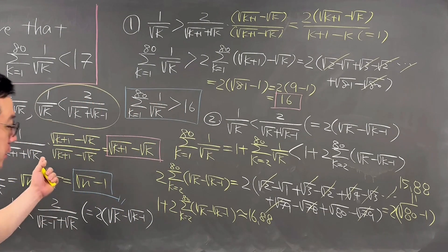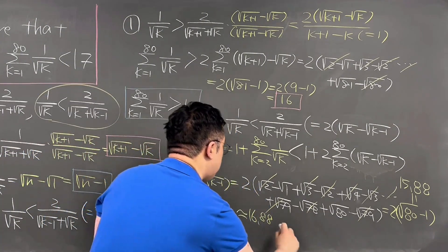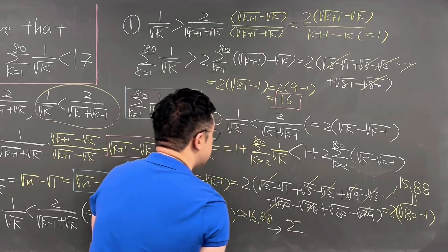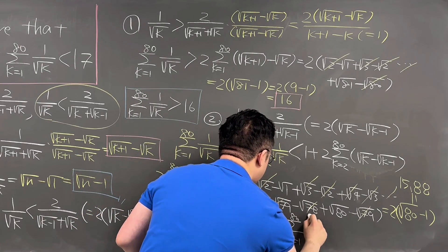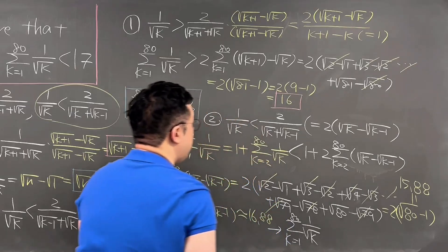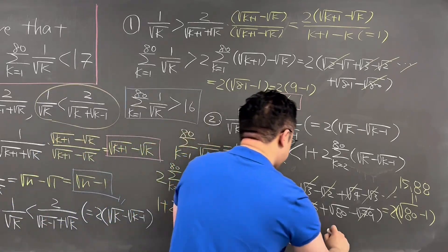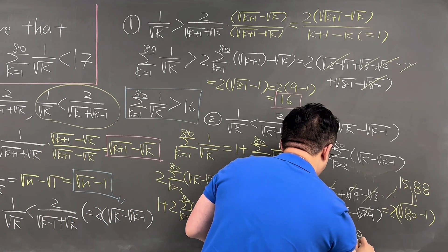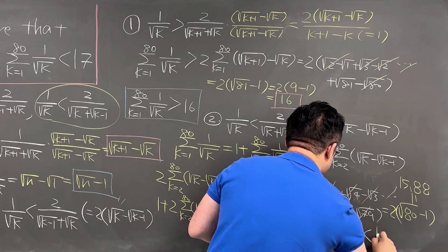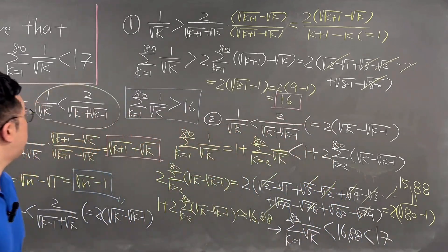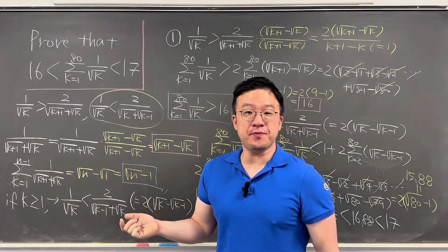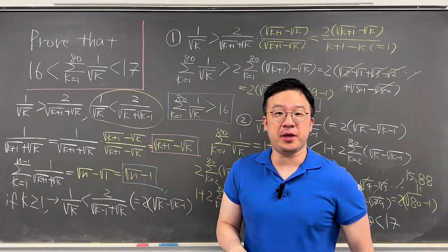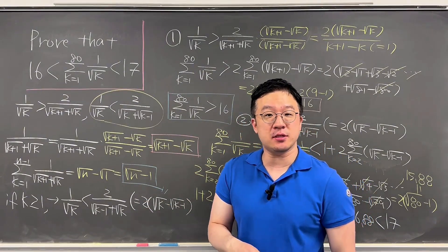So we just proved the upper bound: the summation from k=1 to 80 of 1 over square root of k is less than 16.88, which is also less than 17. So the upper bound is proved. It's a pretty interesting algebra question from the National Math Olympiad — I'll be glad to cover more questions like this soon.